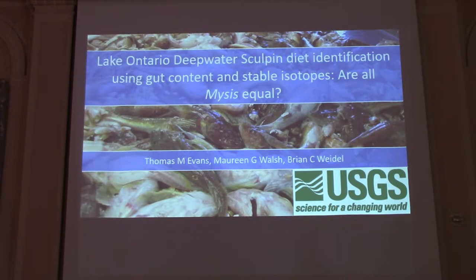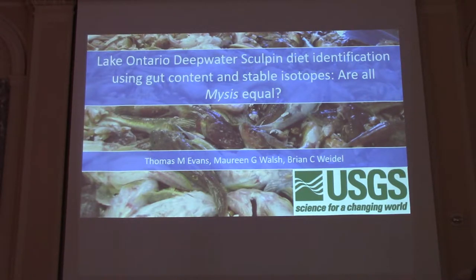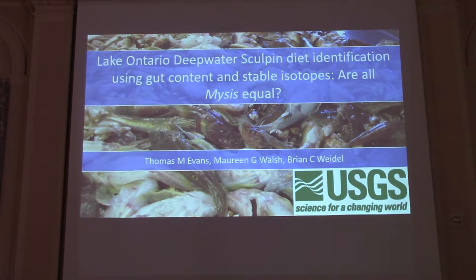We're going to talk today about deepwater sculpin, which are actually one of the more common prey fish in Lake Ontario after alewife. We know that alewife dominate, but after alewife, deepwater sculpin actually turn out to matter a lot. We're also going to be spending a lot of time relating deepwater sculpin to mysis, because it turns out mysis are really important to them.